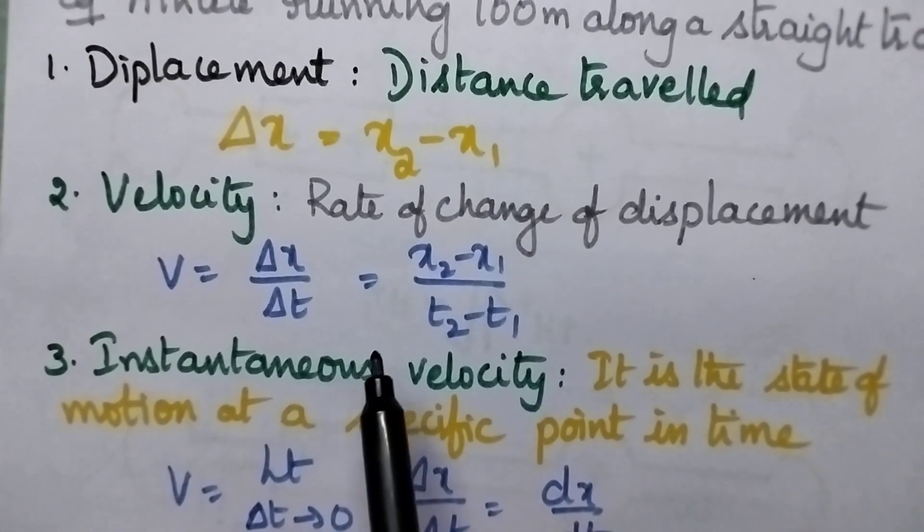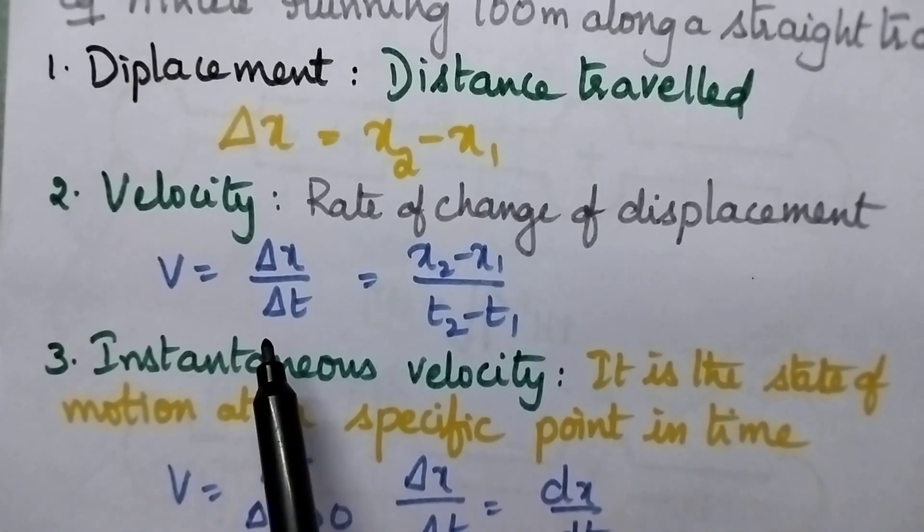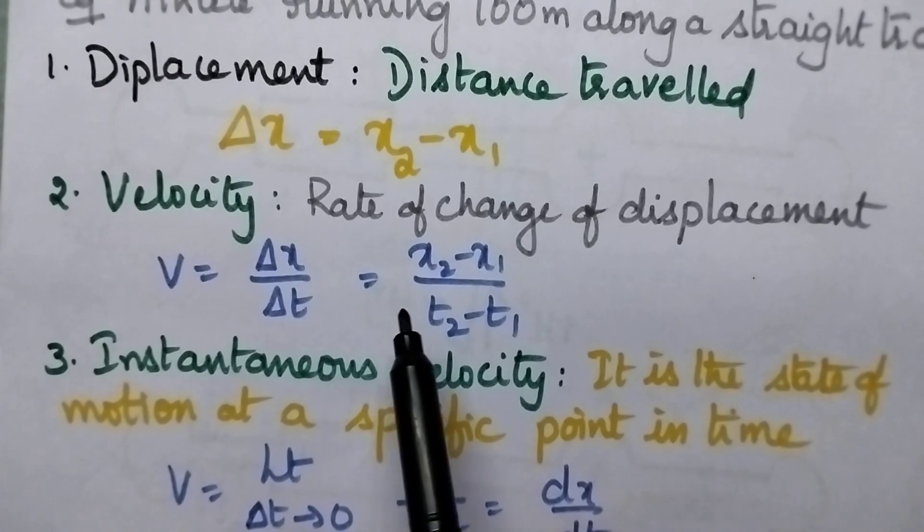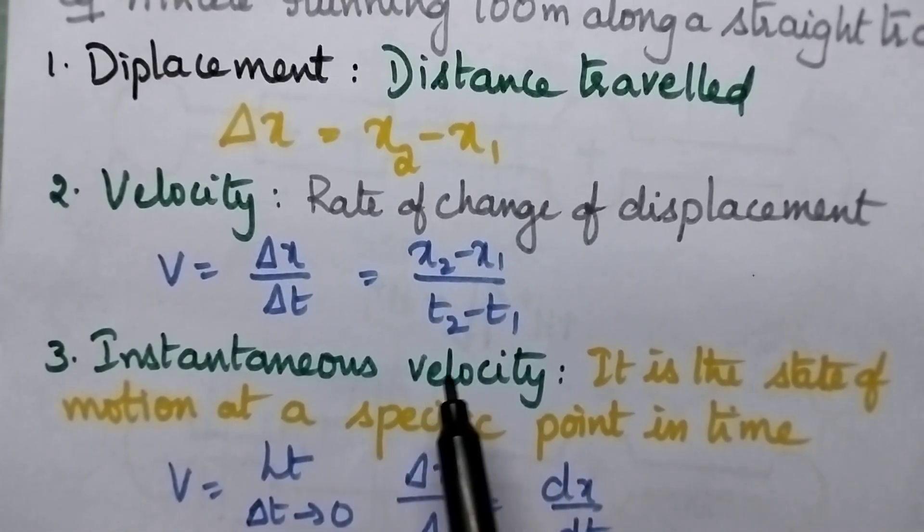Coming to the velocity, it is nothing but rate of change of displacement. That means, v is equal to delta x by delta t that is equal to x2 minus x1 by t2 minus t1. t2 is the final time, t1 is the initial time.